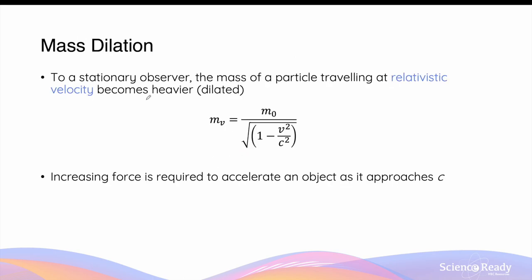Mass dilation is the effect of special relativity on the mass of an object when it starts to travel at a relativistic speed. The mass of a particle traveling at a very high velocity becomes heavier, or in other words dilated. The relativistic mass mv is equal to the rest mass — measured when the object is not moving according to the observer — divided by the square root of 1 minus v squared over c squared.